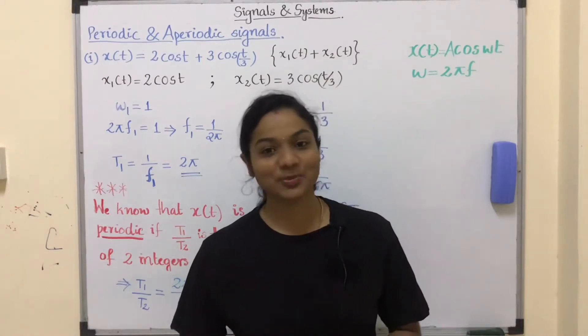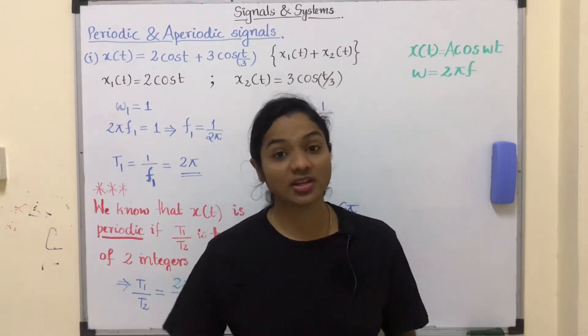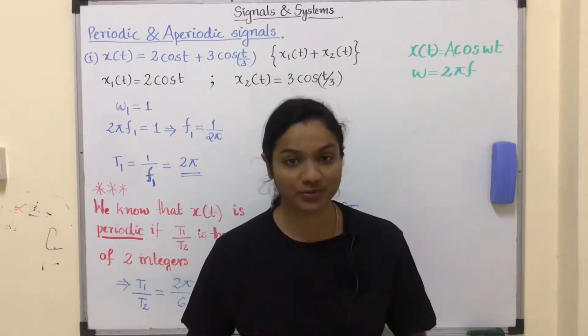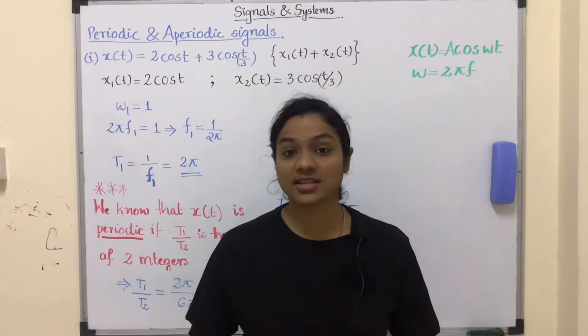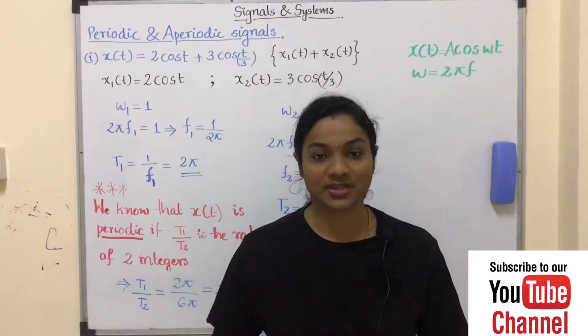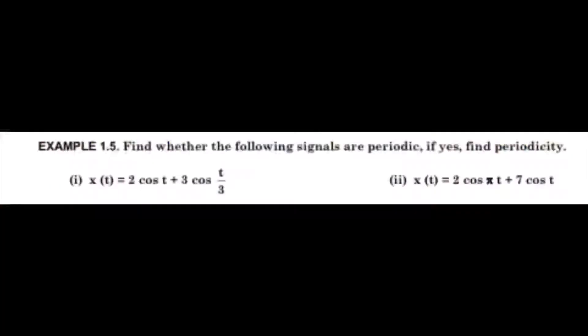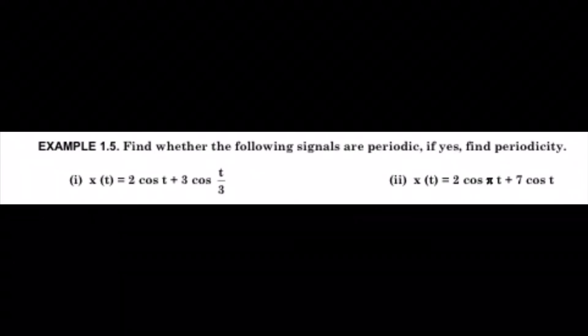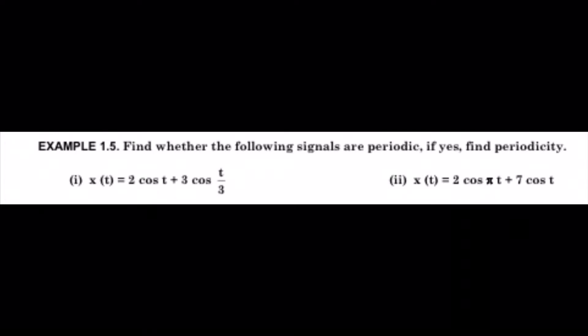Hello everyone, welcome to today's video. Today we are going to discuss some problems based on classification of signals from module 1, where the classification is based on periodicity — that is, periodic and aperiodic signals. Find whether the following signals are periodic; if yes, find the periodicity. The first question is x(t) = 2cos(t) + 3cos(t/3), and the second question is x(t) = 2cos(πt) + 7cos(t).